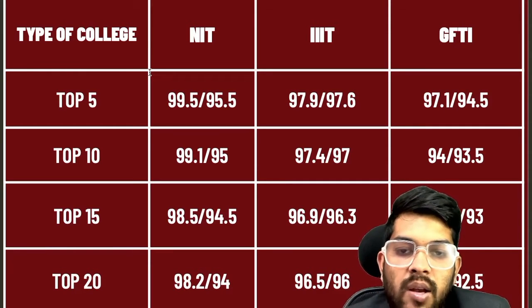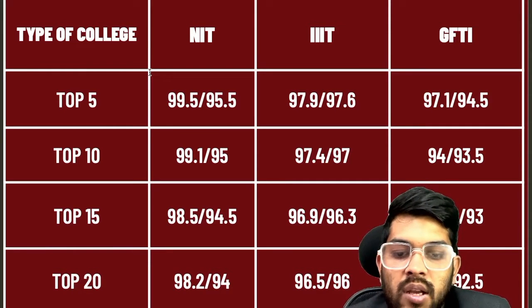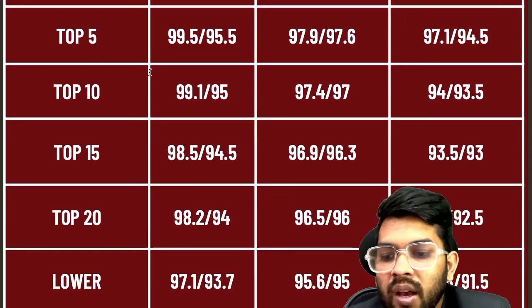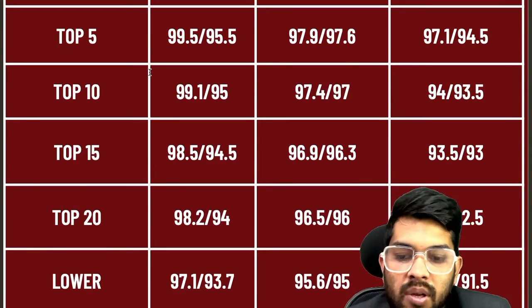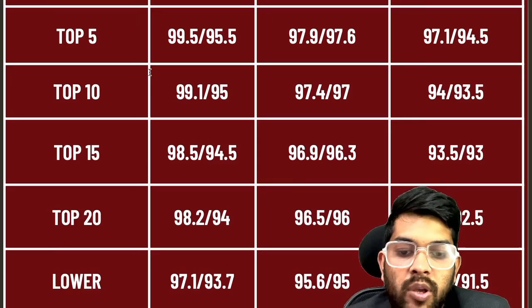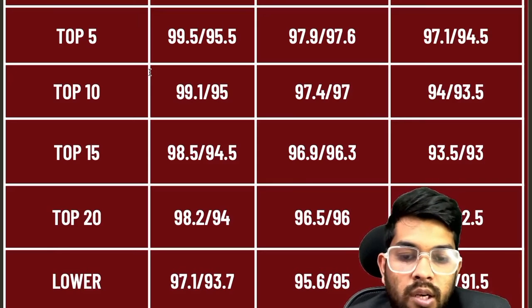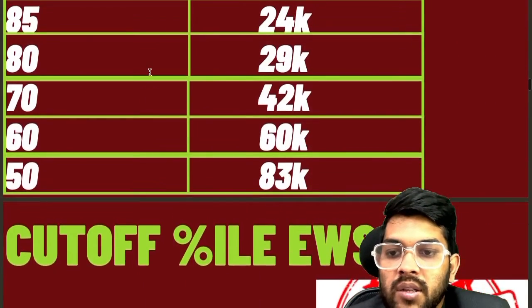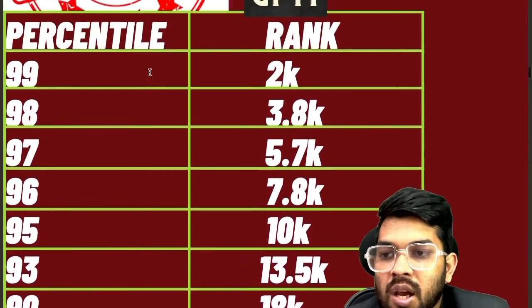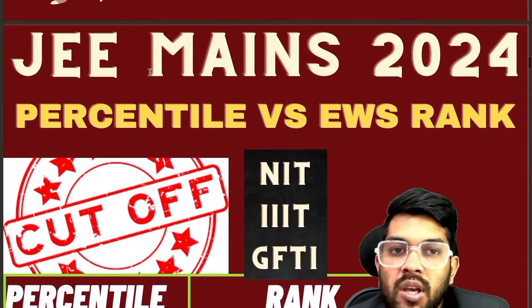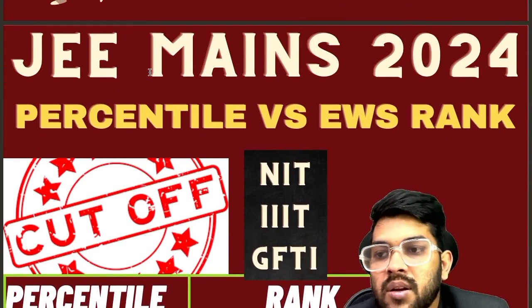For lower NITs: 97.1 for CSE and 93.7 for lower branch. For IIITs: 95.6 and 95. For GFTIs: 92.8 and 91.5. This was the complete information regarding EWS category cutoffs. Please subscribe to the channel so you keep getting everything about JEE Advanced, JEE Mains, and other entrance exams. Thank you.